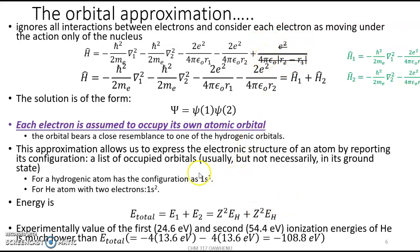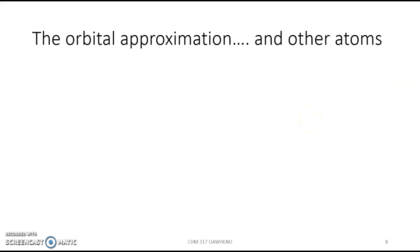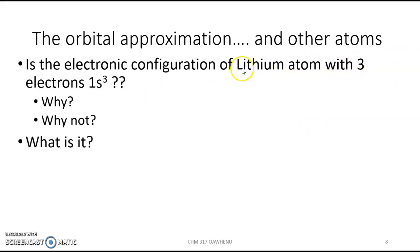However, the orbital approximation is still useful in writing the electron configuration. There are some other approximations that are more accurate than the orbital approximation. But if we look at the orbital approximation and consider it with other atoms.